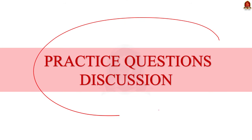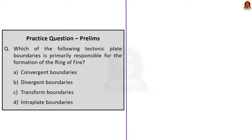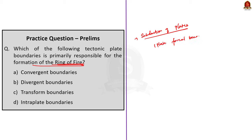Today I have four questions. Let us solve them one by one. The first question: which of the following tectonic plate boundaries is primarily responsible for the formation of the Ring of Fire? From plate tectonics theory, the Ring of Fire is primarily formed due to subduction of tectonic plates at convergent boundaries around the Pacific plate. Subduction occurs when one tectonic plate is forced beneath another, leading to intense geological activity like volcanic eruptions and earthquakes. So the correct option is option A: convergent boundaries.